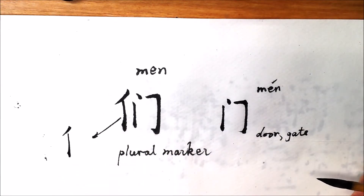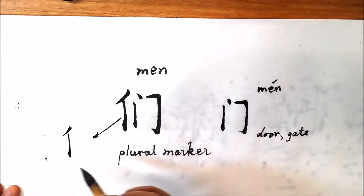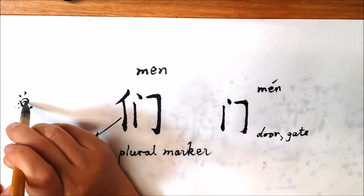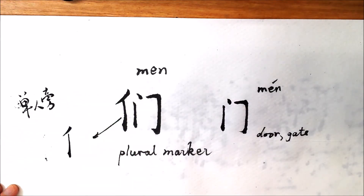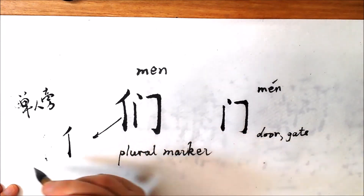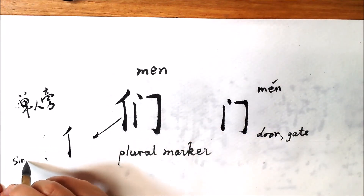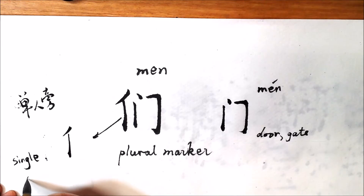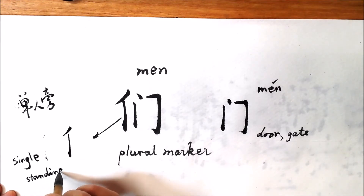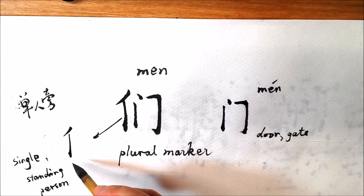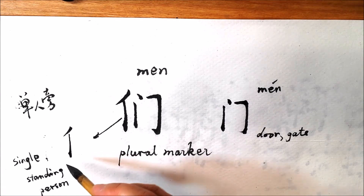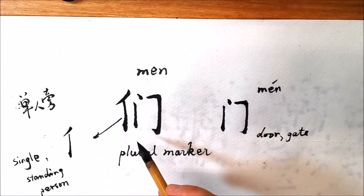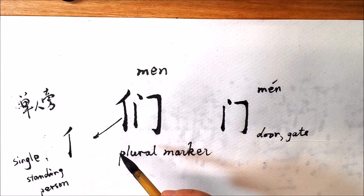This radical we call it Dan Ren Pang. It means a single standing person. This radical, Dan Ren Pang, indicates that this character has something to do with a human being.